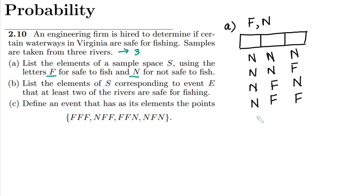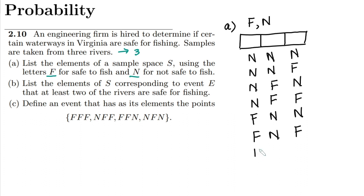Similarly, the next options fix the first location with safe. So we have F, N, N. Then F, N, F. Then F, F, N. And the last one is F, F, F — safe, safe, safe.